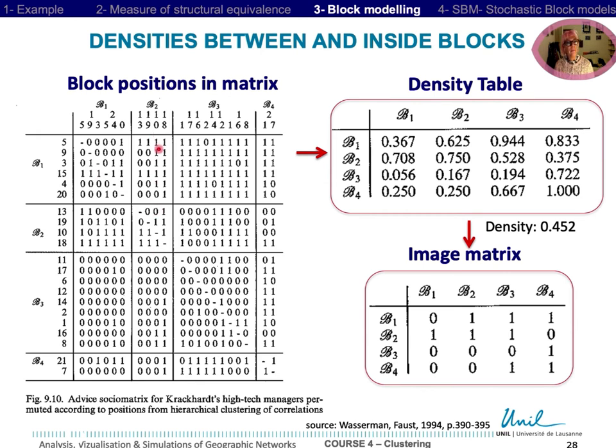For example, the block B1, B2, here, 15 ties exist out of 24 possible choices, so the density is 0.625.